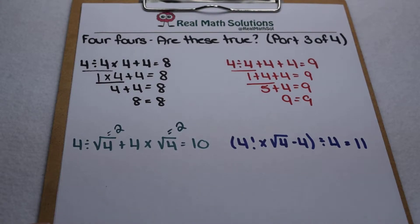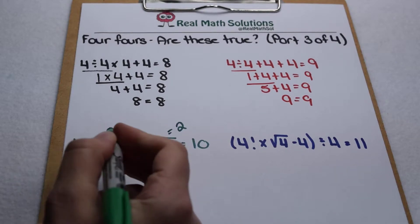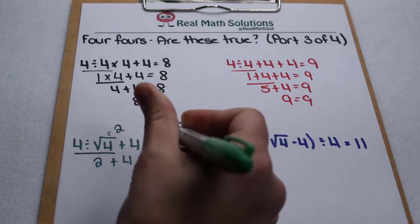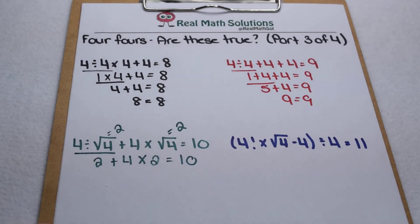So now we can work our multiplication and division left to right. So 4 divided by the square root of 4 is really 4 divided by 2. So that leaves us with 2 plus 4 times the square root of 4, which we know is worth 2. So we're just going to write it as 2.